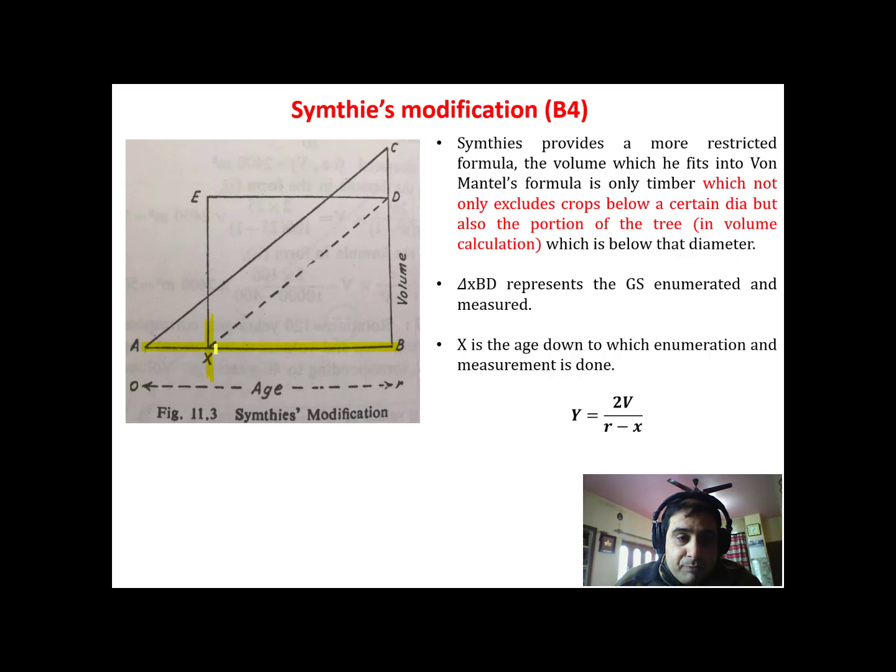So normally we should have this portion as the enumerated growing stock, but because he wants to exclude the volume of the trees, portion of the trees which don't have significant contribution in volume, he reduced the growing stock triangle to x, b, d.